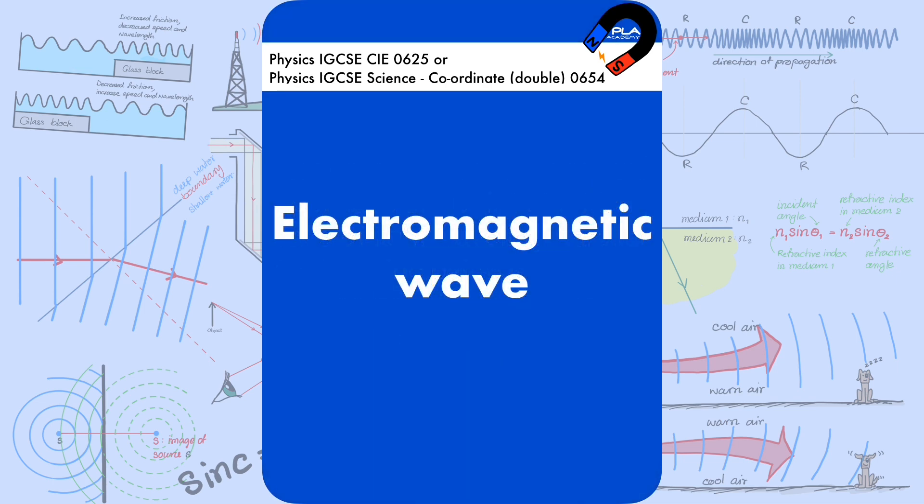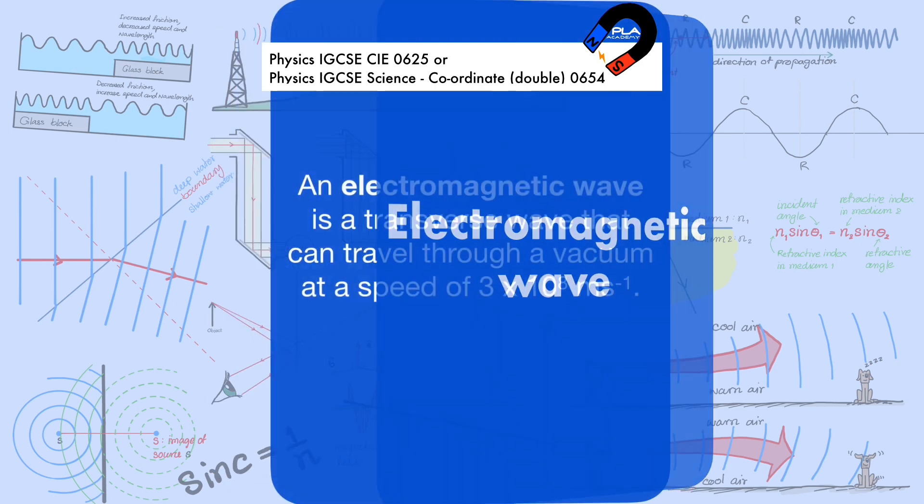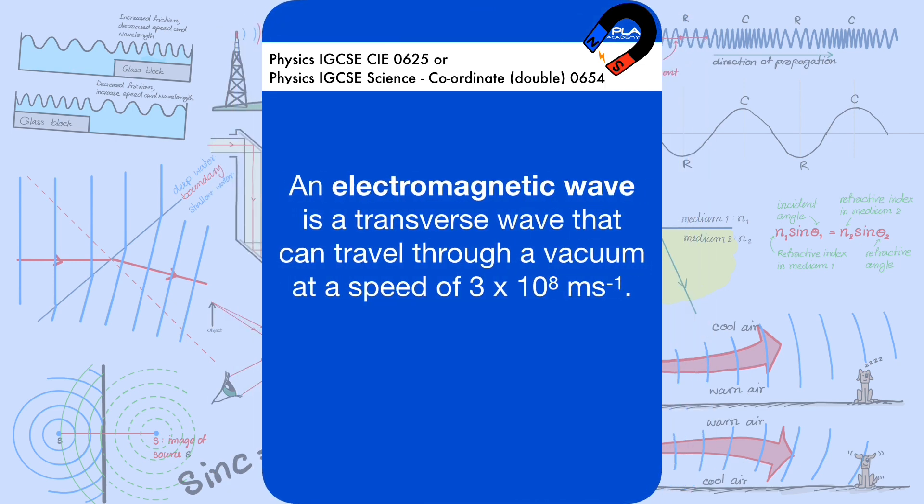An electromagnetic wave is a transverse wave that can travel through a vacuum at a speed of 3 × 10⁸ meters per second.